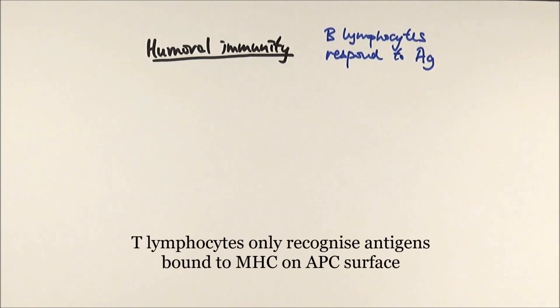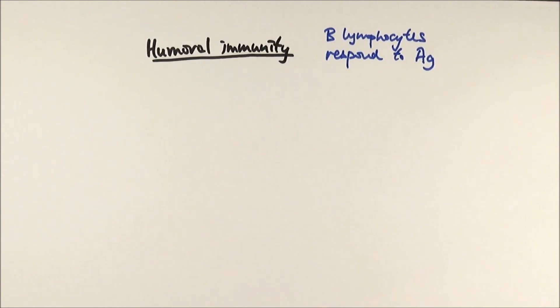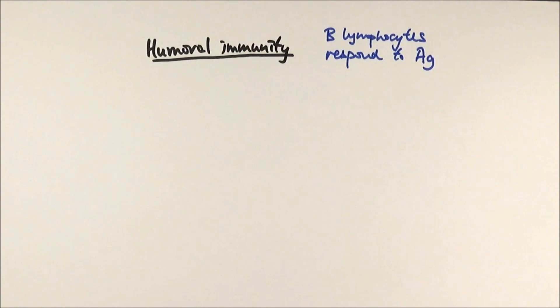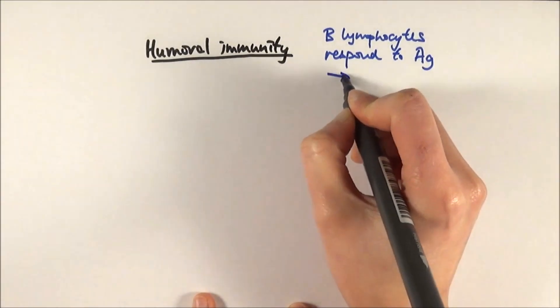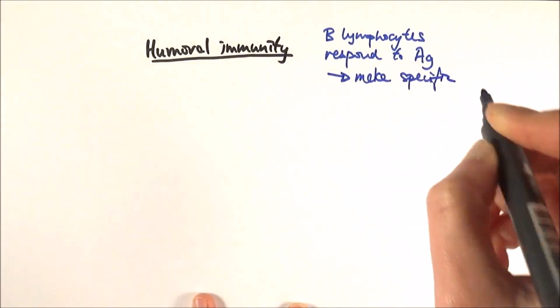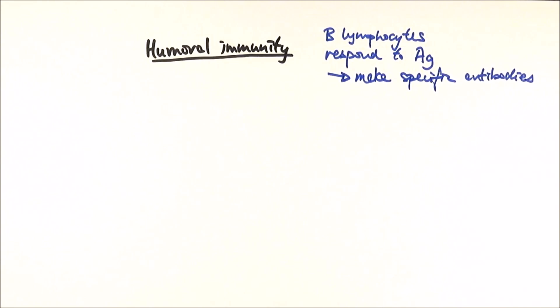T lymphocytes can only bind to antigens that have been bound with a MHC complex, so they can only really recognize antigen presenting cells or cancer cells. Whereas B lymphocytes can respond to APCs but they can also respond to pathogens directly. The idea is once they respond to that, they can make lots and lots of specific antibodies for the counter-attack. That is, in a nutshell, humoral immunity.